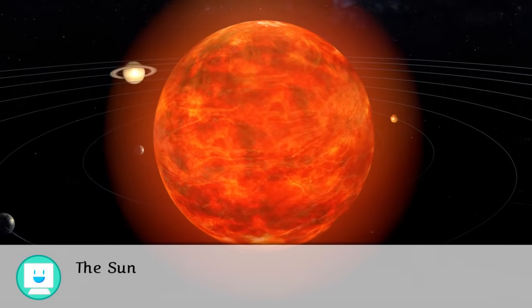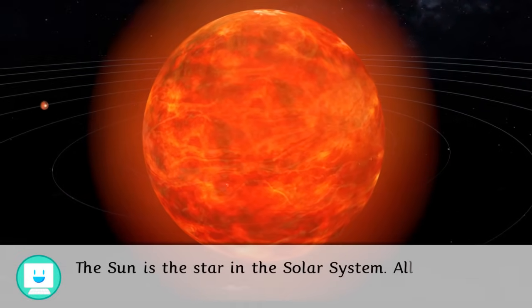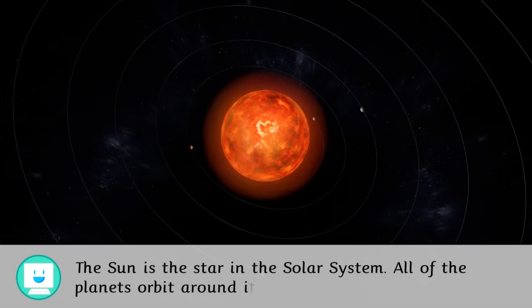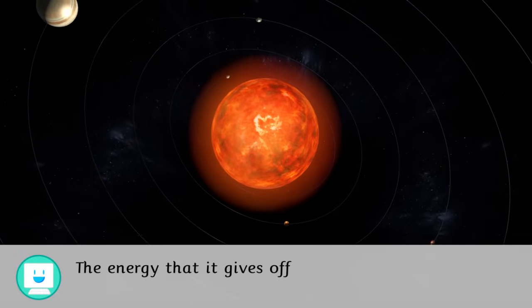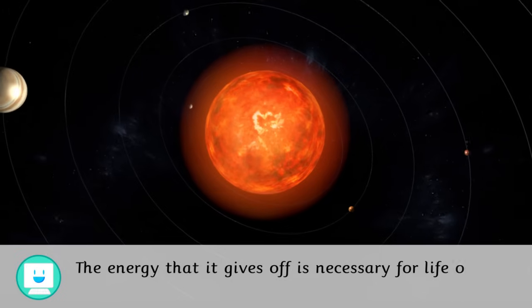The Sun is the star in the solar system. All of the planets orbit around it. The energy that it gives off is necessary for life on Earth.